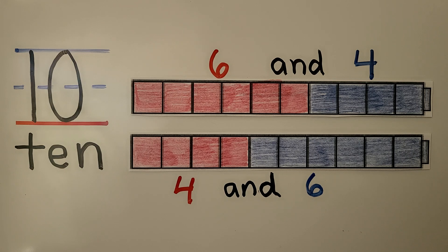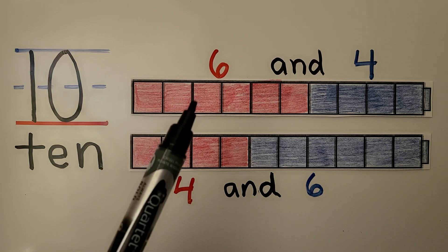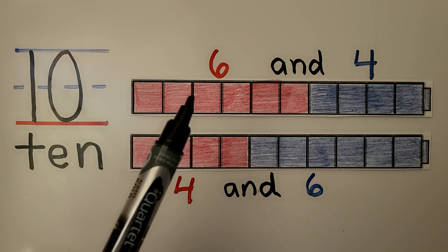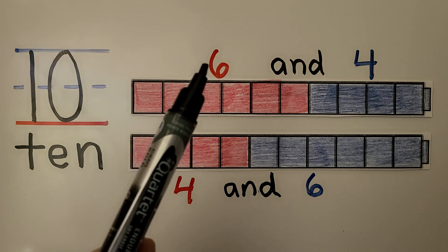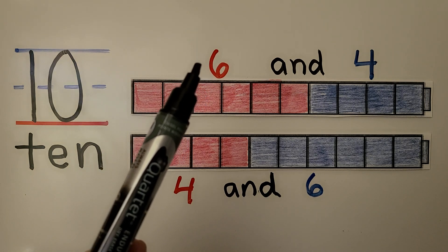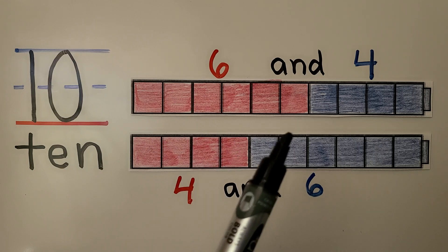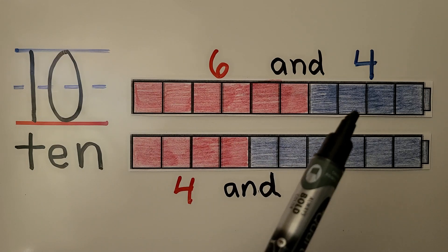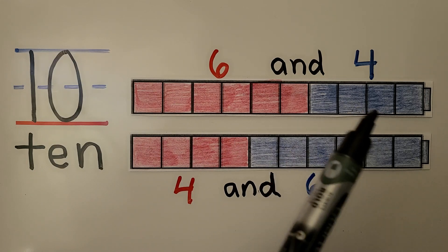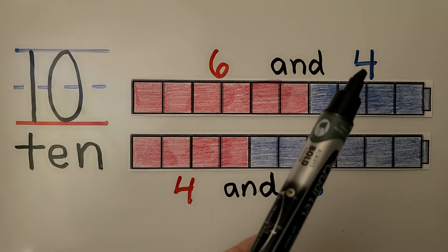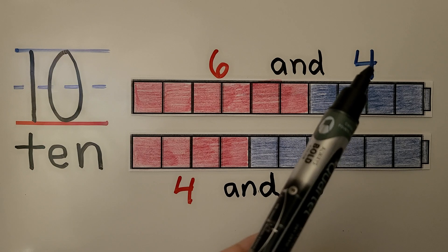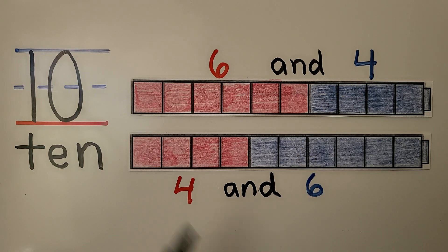We can use red and blue, or we could use blue first and then red. The first color, red, is the first number that's red. The second color, blue, is the second number that's blue.